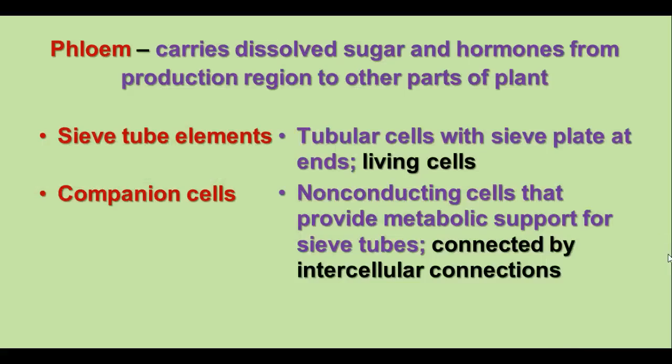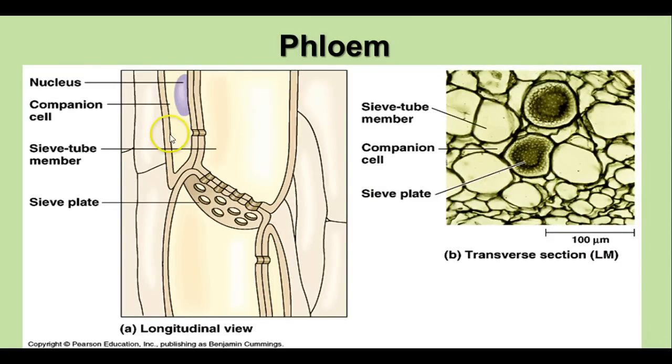The phloem carries sugars and hormones from the region they're produced to the rest of the plant. Phloem is composed of two kinds of cells: sieve tube elements, which are tubular-shaped cells with a sieve plate at the ends and are living cells; and companion cells, which don't conduct the fluids but provide metabolic support for the sieve tube cells through intracellular connections. The nucleus in the companion cell provides all the metabolic support for the sieve tube members as they transport sugars and hormones throughout the plant.